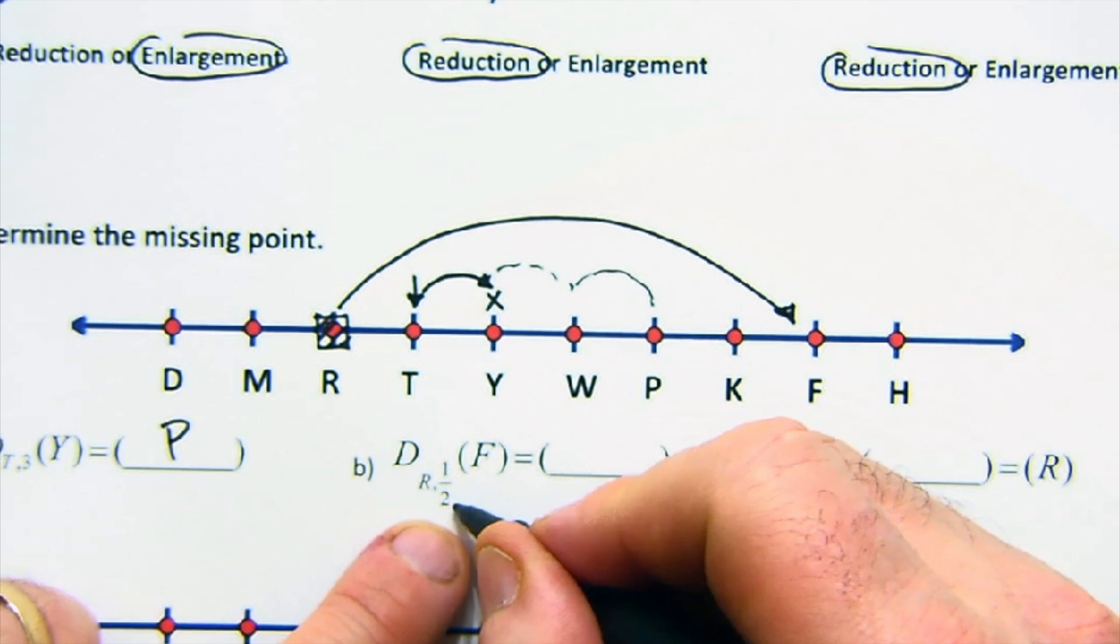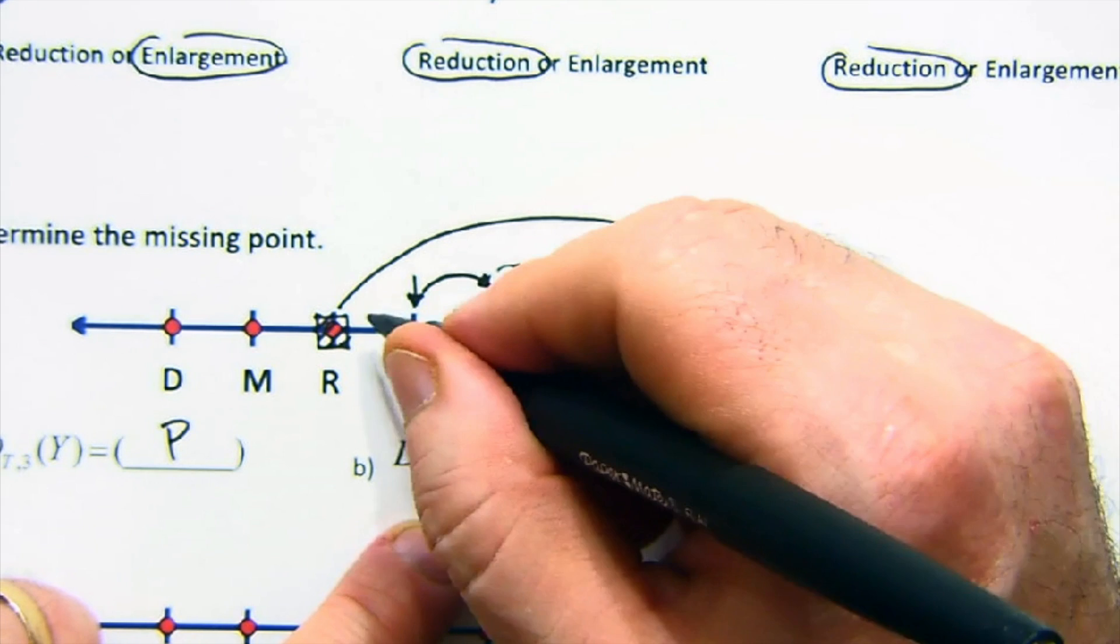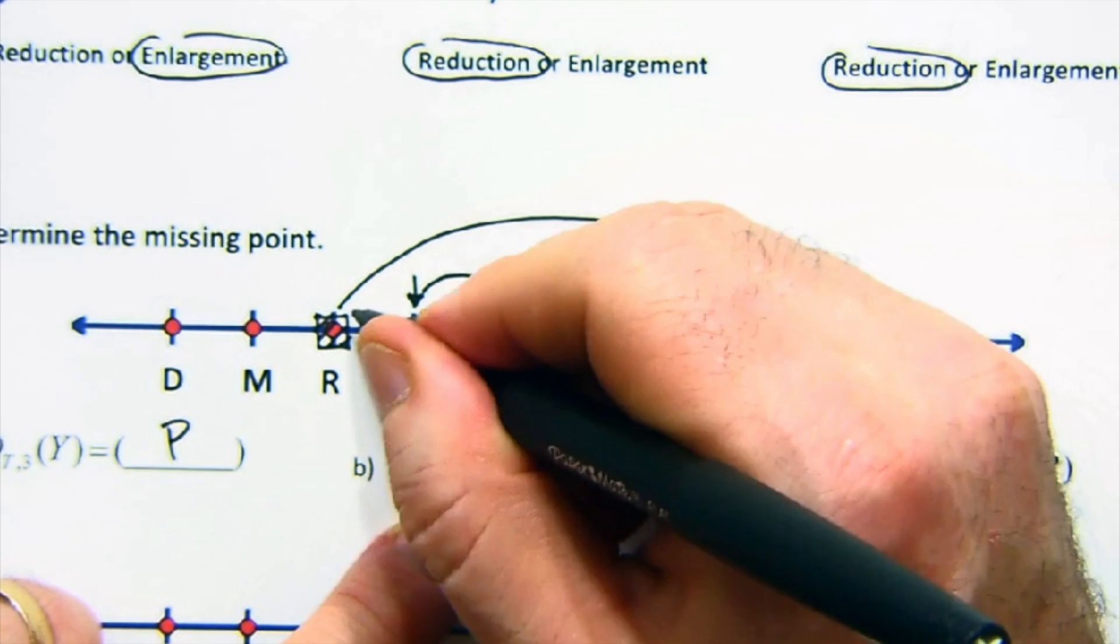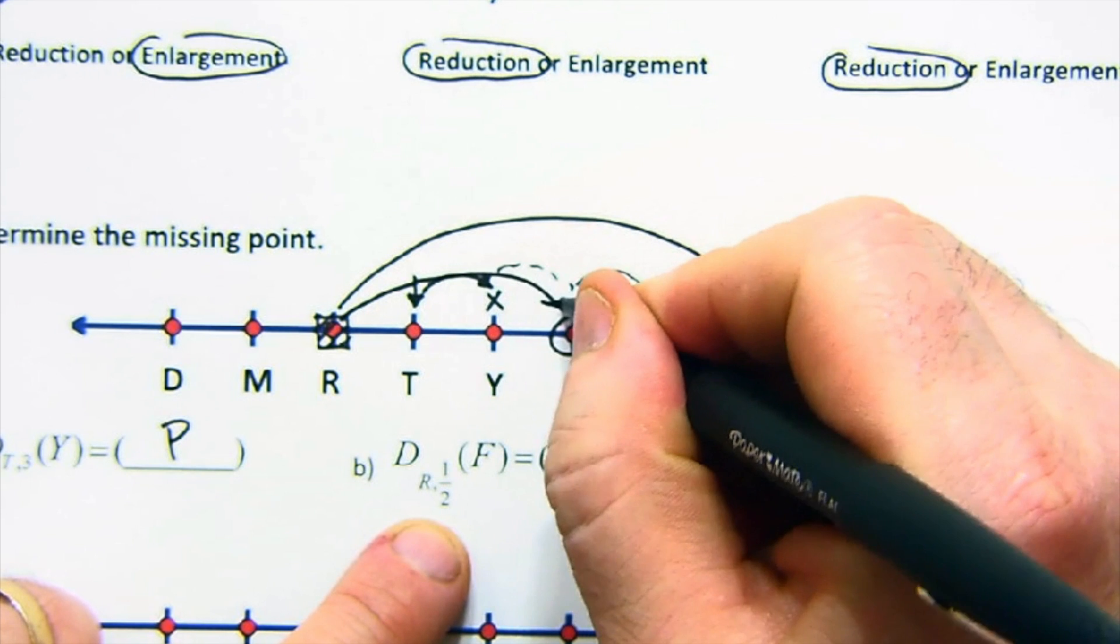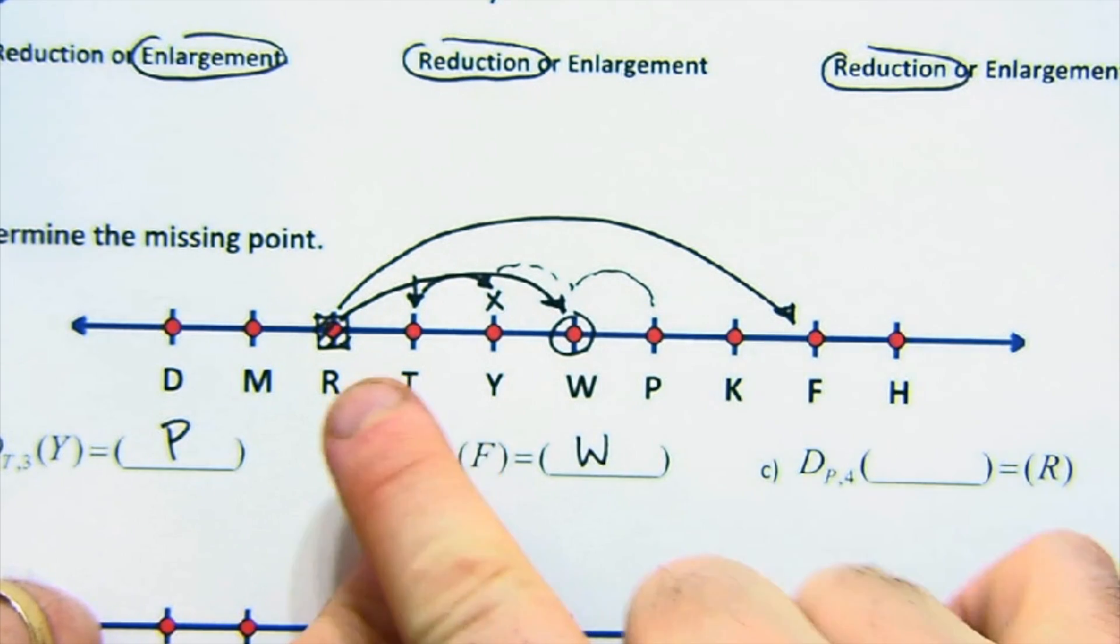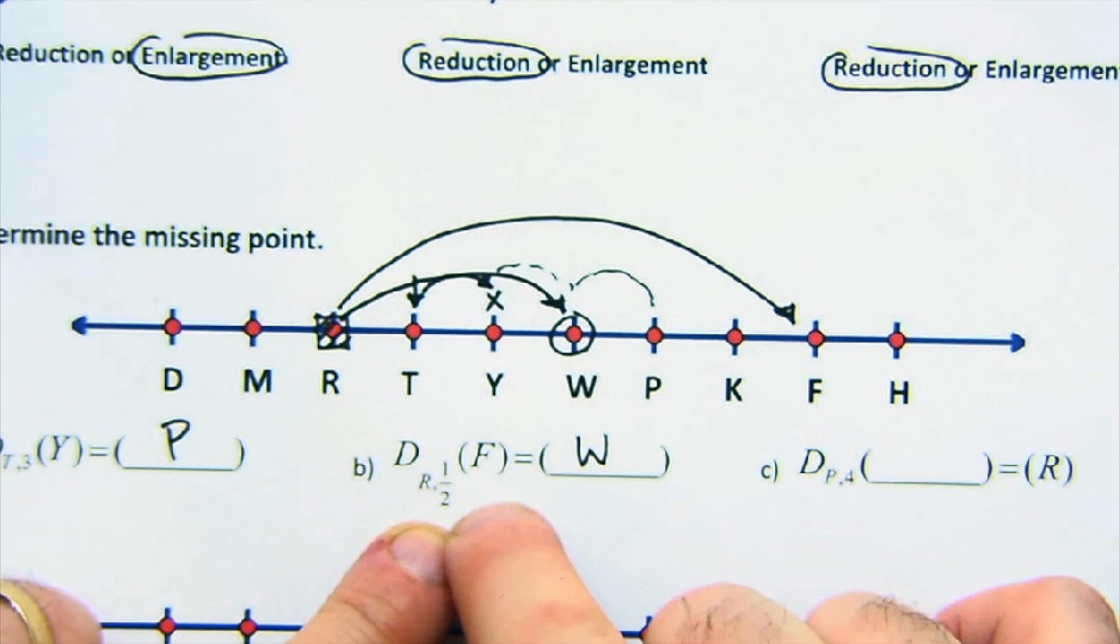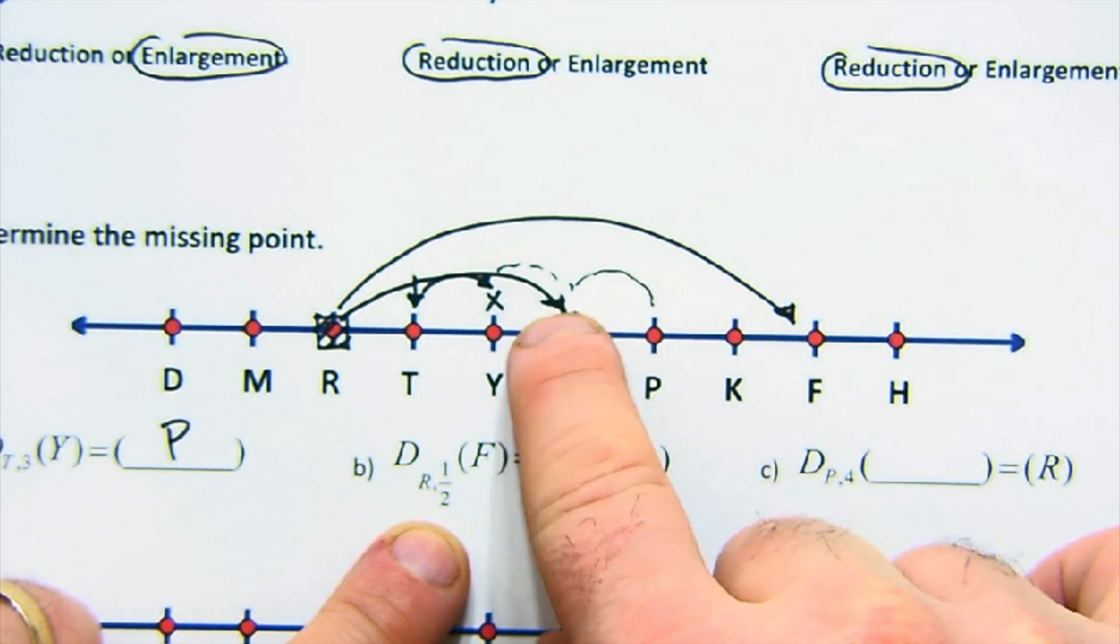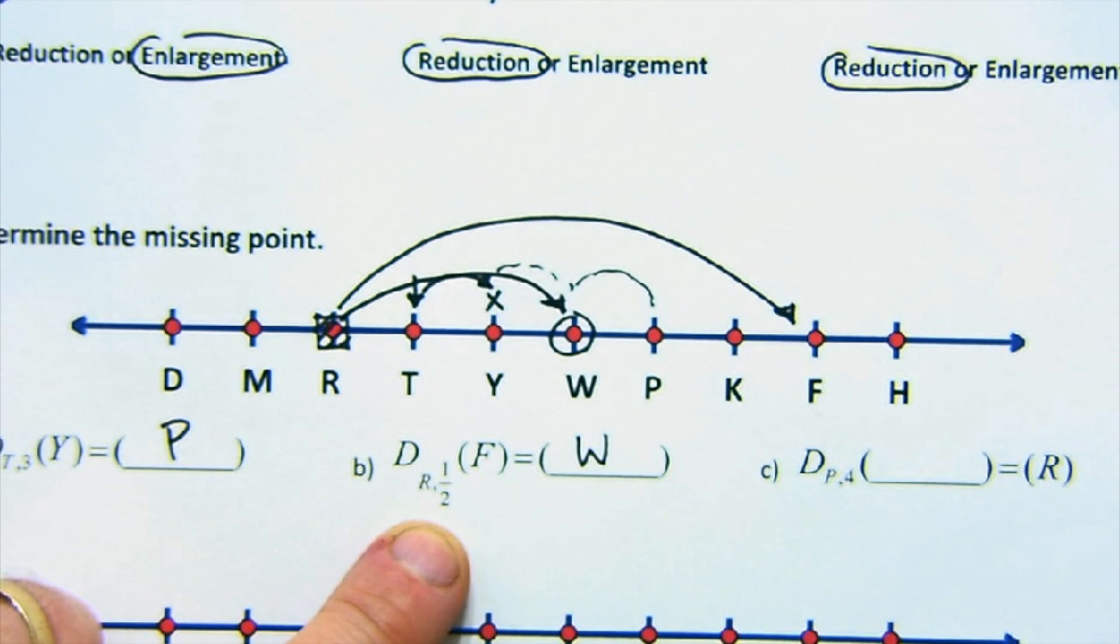We're going to dilate half of that. So half of six is three. One, two, three. Half of that, basically, is a dilation of a scale factor of a half. So F lands us at W. To see how we're centered at R, we're dilating F. F is six away. We're going to dilate half of that value. So, of course, it comes back two, three away.